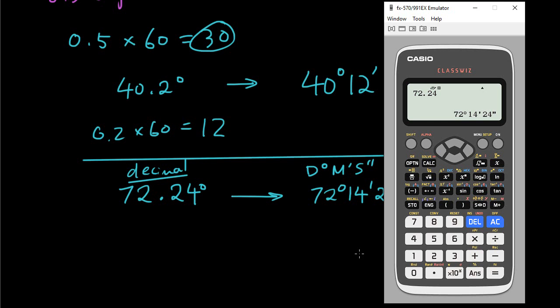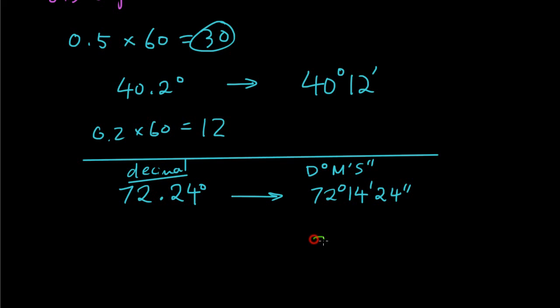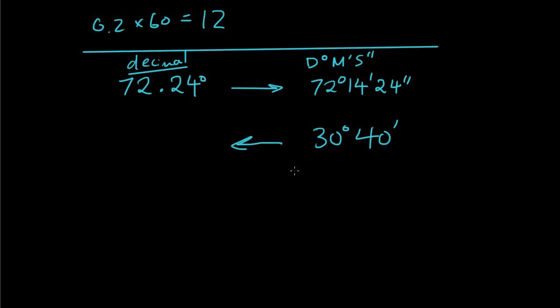Now if I want to go backwards, so if I want to know 30 degrees, 40 minutes, what is that in decimal? Now if you don't have a calculator, then you know that it's going to be 30 point something degrees. So what you do is you can see that there's 40 minutes here, so 40 minutes out of 60 minutes. If you type that in the calculator, it'll give you 0.6 recurring. So you can just put 30 point 6 recurring degrees.